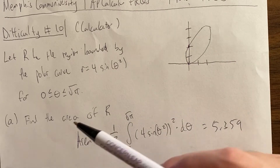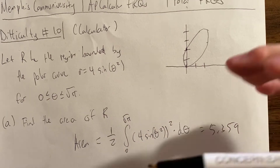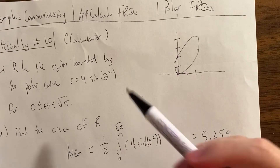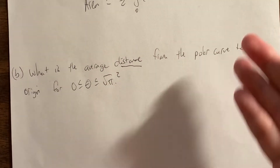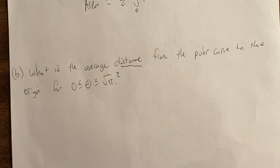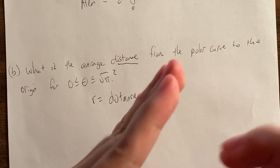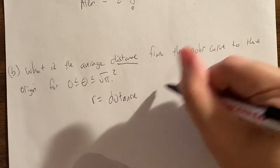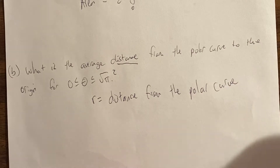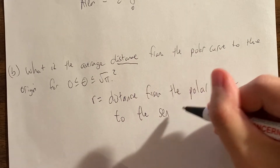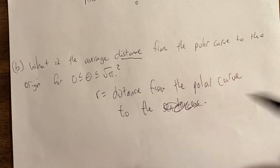Now we have another question dealing with the distance from the polar curve to the origin. Keep in mind that's just the radius. R is equal to the distance because that's how polar curves work — you start at the origin, you go an angle, and then you go that distance, the r. So r is the distance from the polar curve to the origin.